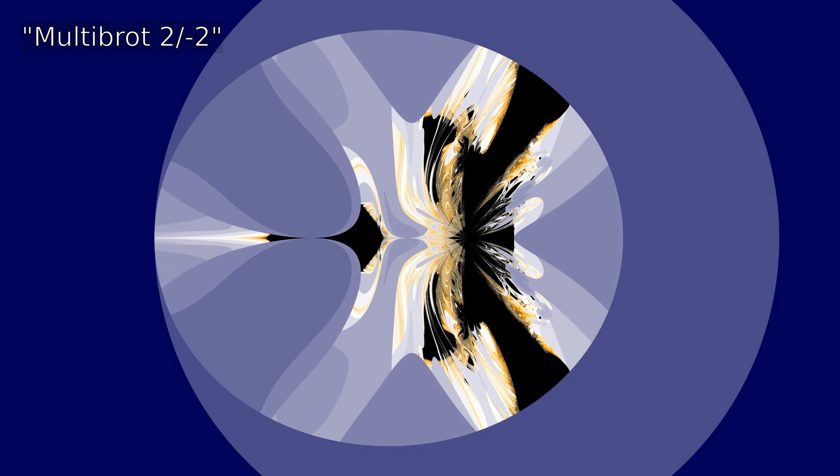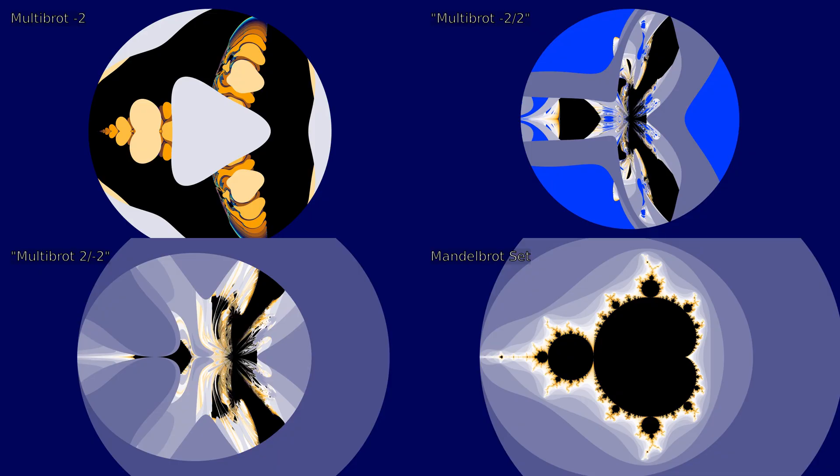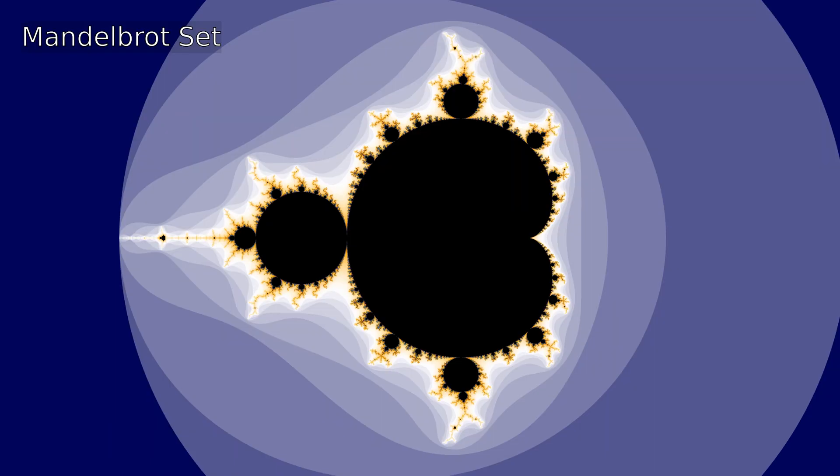This is alternating between multibrot minus two and two. And this one between two and minus two. And here together with the Mandelbrot set and the normal minus two.